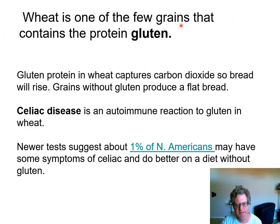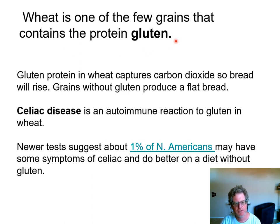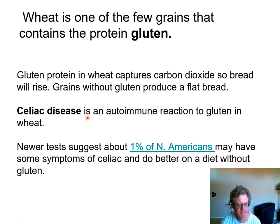Wheat is one of the few grains that contains the protein gluten. When we add baking soda or yeast, it produces carbon dioxide, which is captured by the gluten. That gas makes your cake, cookies, or bread rise. If you don't have gluten protein, you can't capture carbon dioxide — so cornbread made without wheat flour would be very flat, and pancakes without wheat flour would be very flat. The gluten protein is important if you want a risen product. Some people have autoimmune reactions to gluten, called celiac disease. People used to think it was very rare, but a link from the University of Chicago suggests that maybe 1% of North Americans would do better on a diet without gluten, as they have some sort of reaction to it.